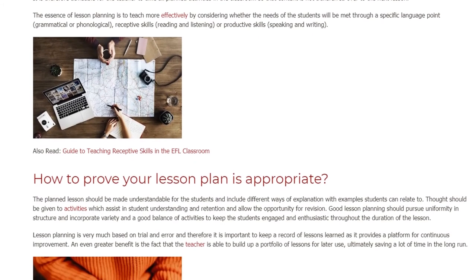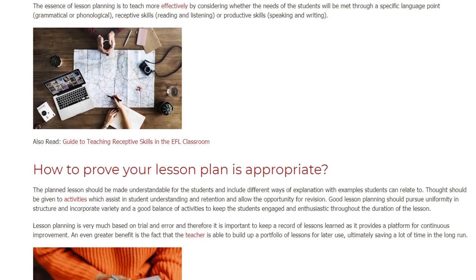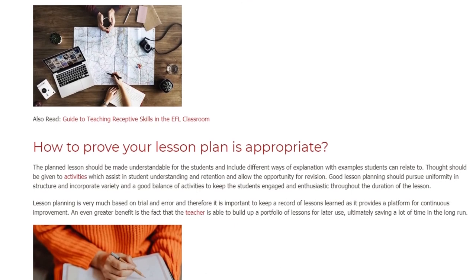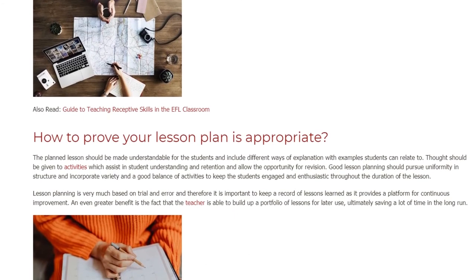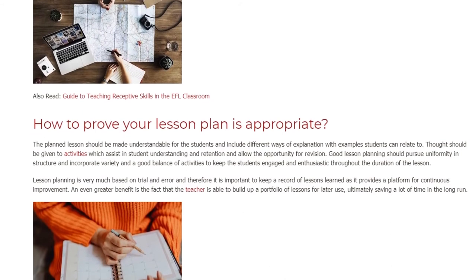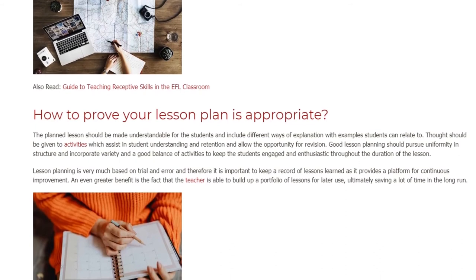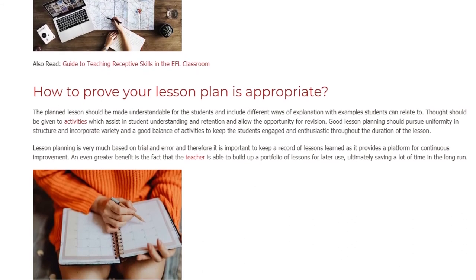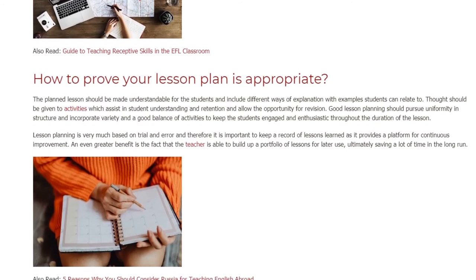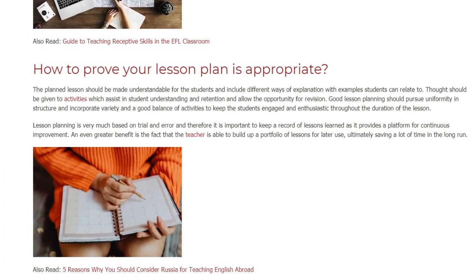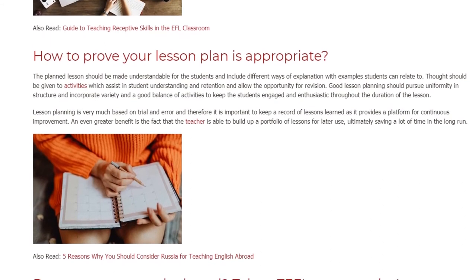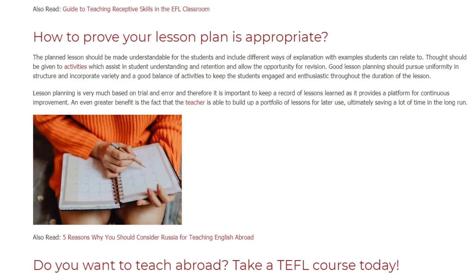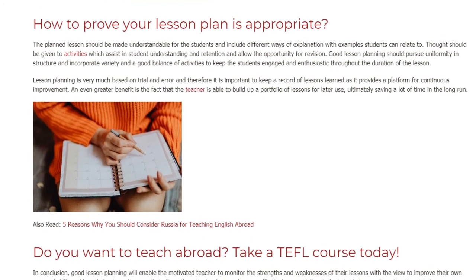How to prove your lesson plan is appropriate. The planned lesson should be made understandable for the students and include different ways of explanation with examples students can relate to. Thought should be given to activities which assist in student understanding and retention and allow the opportunity for revision. Good lesson planning should pursue uniformity in structure and incorporate variety and a good balance of activities to keep the students engaged and enthusiastic throughout the duration of the lesson. Lesson planning is very much based on trial and error, and therefore it is important to keep a record of lessons learned as it provides a platform for continuous improvement. An even greater benefit is the fact that the teacher is able to build up a portfolio of lessons for later use, ultimately saving a lot of time in the long run.